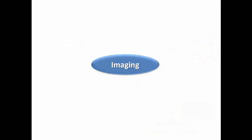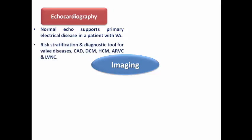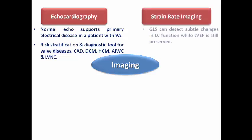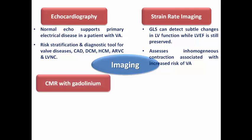The basic imaging is echocardiography. A normal echocardiogram in a patient with ventricular arrhythmia supports the diagnosis of a primary electrical disease, usually a channelopathy. If abnormal, it helps diagnose and risk-stratify valvular disease, coronary artery disease, dilated cardiomyopathy, hypertrophic cardiomyopathy, ARVC, and LV non-compaction. Strain rate imaging, including global longitudinal strain, detects subtle LV dysfunction when ejection fraction is still preserved and assesses inhomogeneous contraction associated with increased arrhythmia risk.